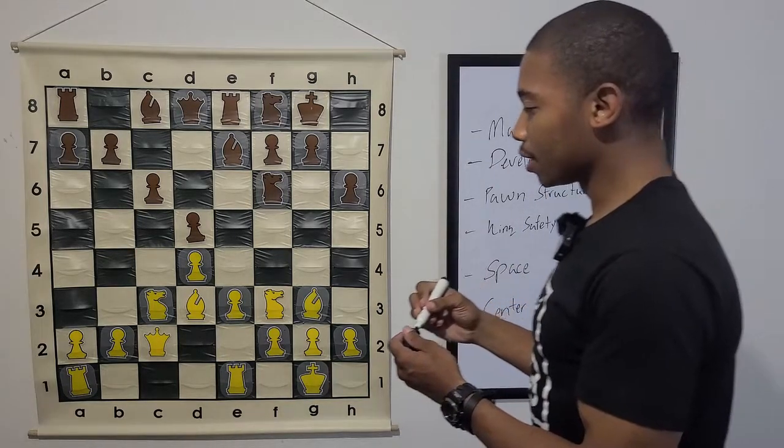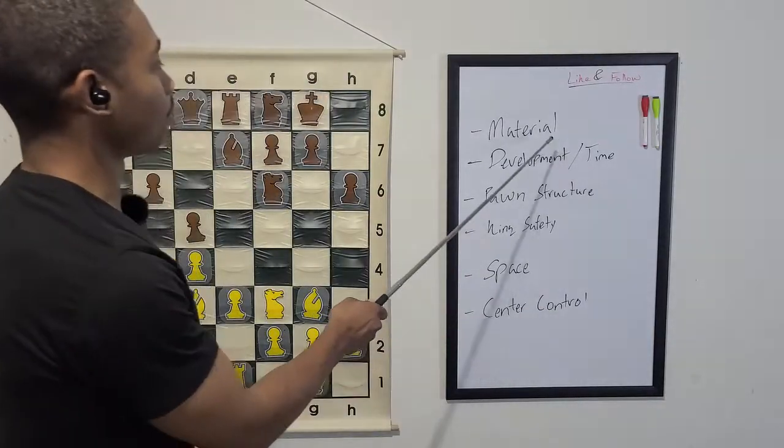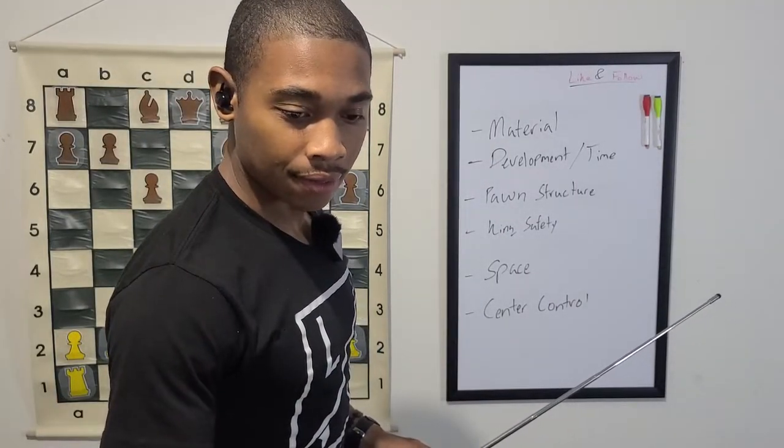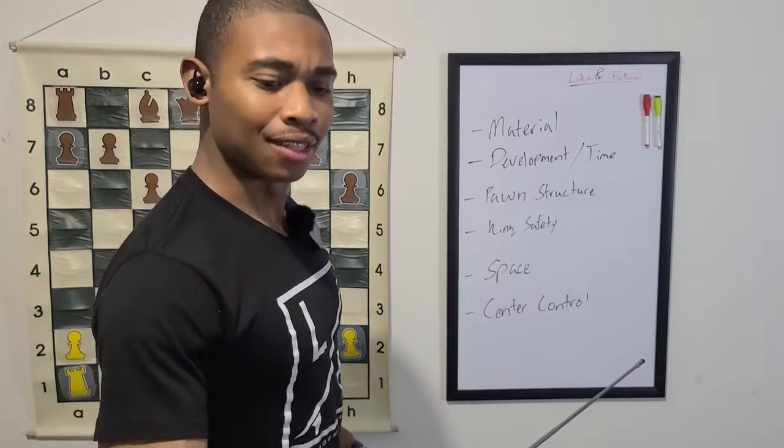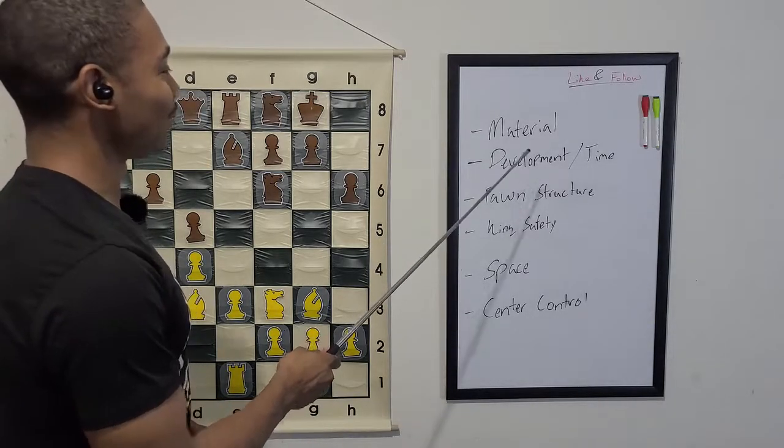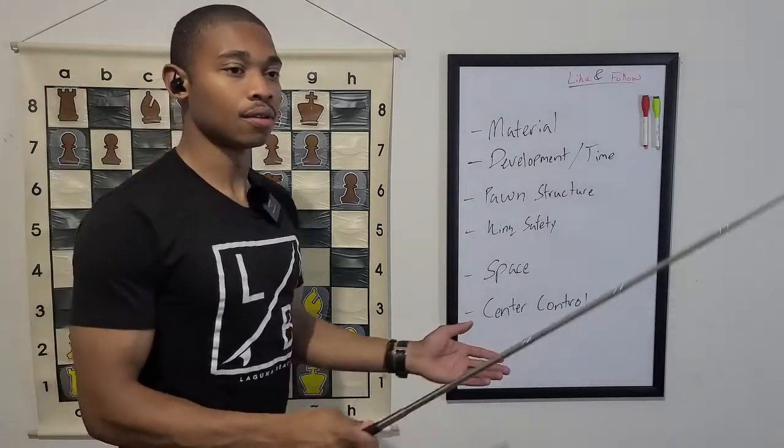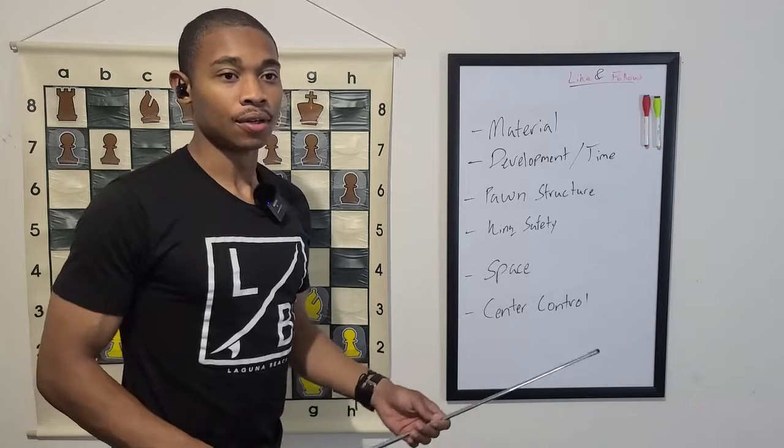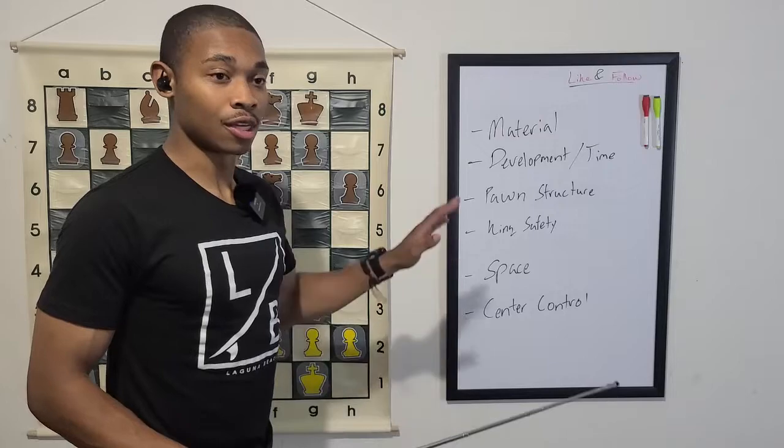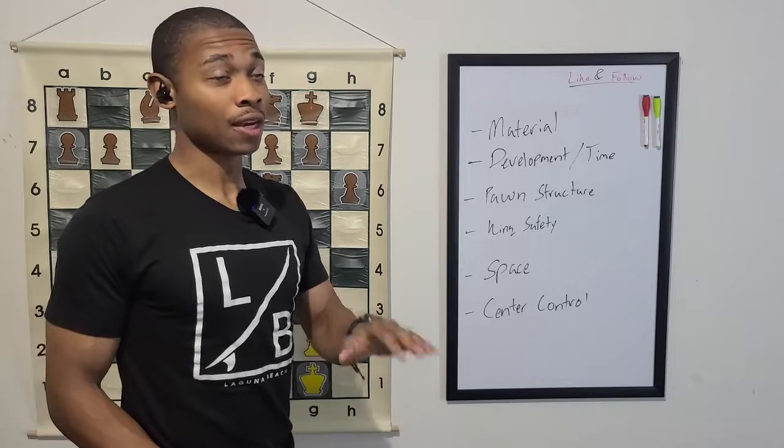When you have all six of these, you can evaluate a position really fast. Let me explain right quick. First of all, material. When we're thinking about material, just thinking about who is up in material. If somebody is up like a bishop or a knight, or if you're below, that's really important to recognize. Because if you're below, then that comes with different principles than if you were ahead.